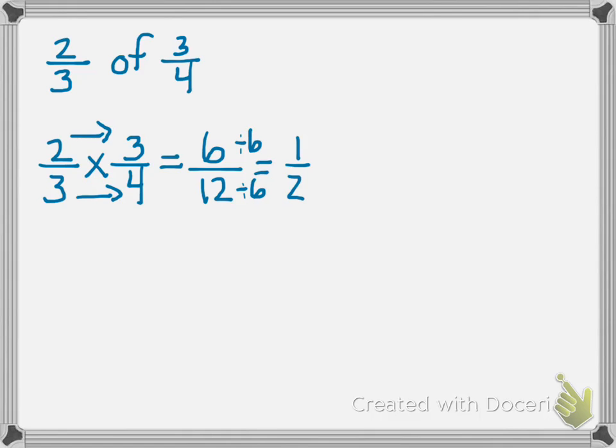I could have gone in and cross-simplified, and I could have said, well, I know that 3 and 3 have a factor in common, which is 3. 3 goes into 3 one time. 3 goes into 3 one time. And then when you multiply, 2 times 1 would give me 2, and 1 times 4 would give me 4, so I'd have 2 fourths, which is also equal to 1 half. So we're saying that 1 half is our answer.